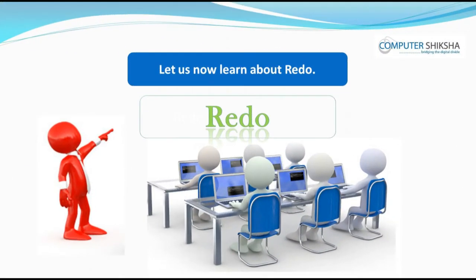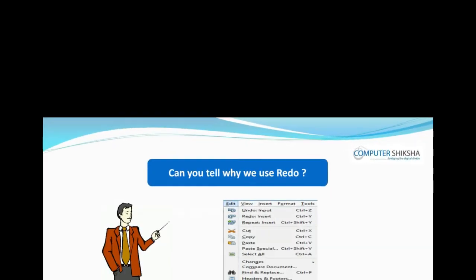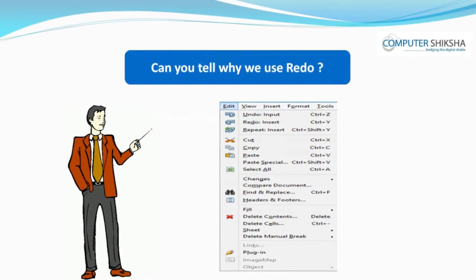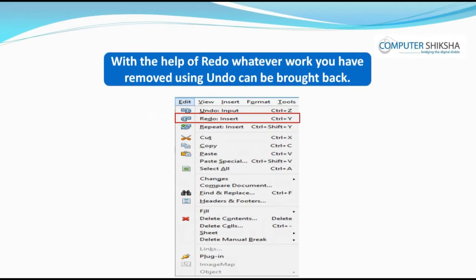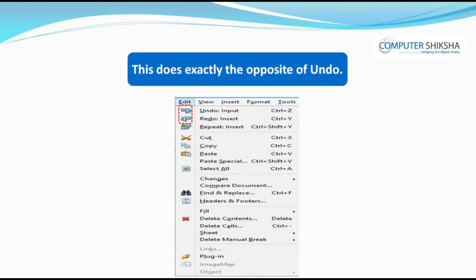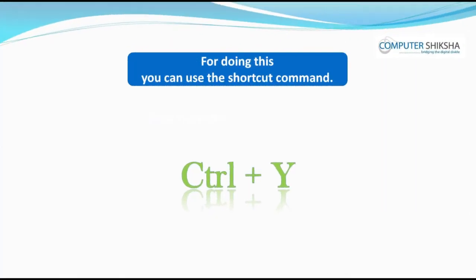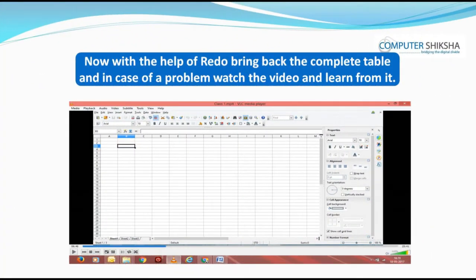Let us now learn about redo. With the help of redo, whatever work you have removed using undo can be brought back. This does exactly the opposite of undo. The shortcut command for redo is Control+Y. Now, with the help of redo, bring back the complete table and in case of a problem, watch the video.